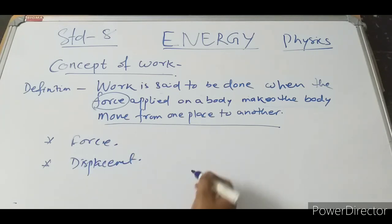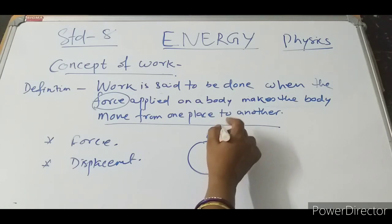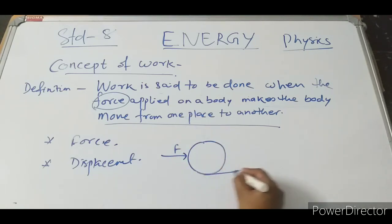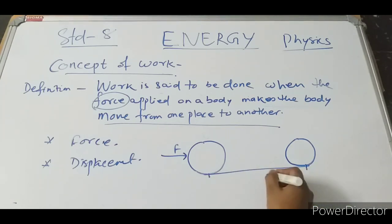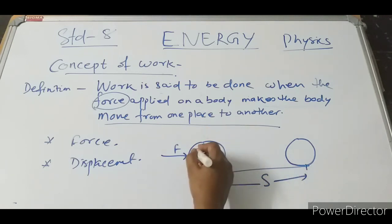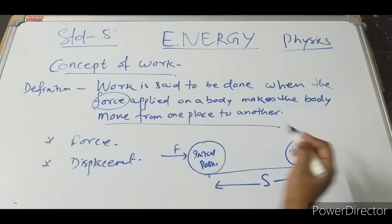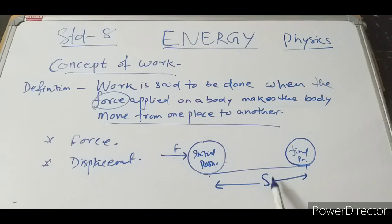Now let us see this. Here is the body. Initially the body is here. Force is applied on the body and from this initial position the body moves to this final position. Let the distance it moves be S. So work is said to be done when force is applied on the body and body displaces from one place to another.